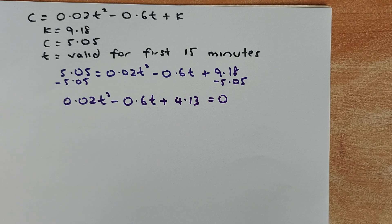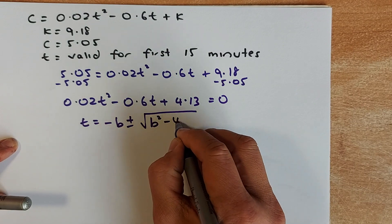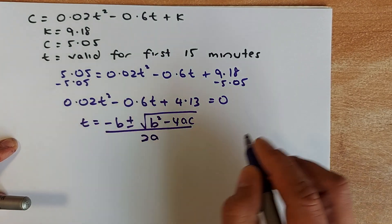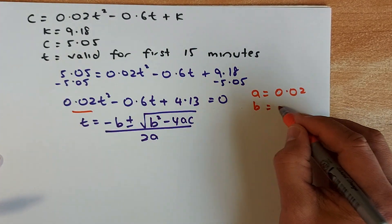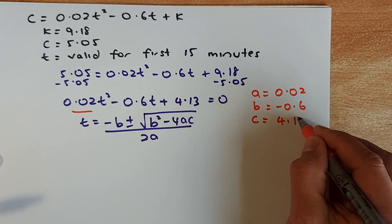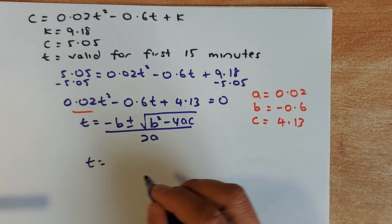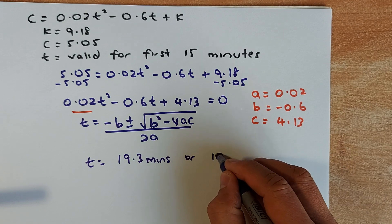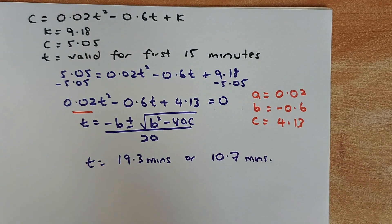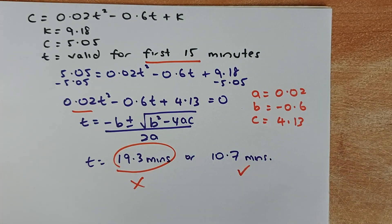You have to solve using the quadratic formula: x = (−b ± √(b² − 4ac)) / 2a. This time a = 0.02, b = −0.6, and c = 4.13. When you substitute, we find t = 19.3 minutes or 10.7 minutes. Because the condition was that it is only valid for 15 minutes, 19.3 minutes cannot be the answer. So the actual answer is 10.7 minutes.